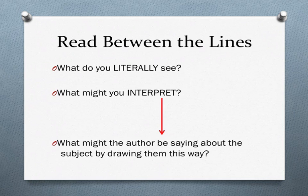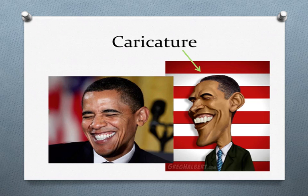One of the ways that images are manipulated is through caricature. This is where we take somebody's physical features and distort them to make them look a little silly. Obama is known for a narrow chin, big toothy grin, and ears that stick out a little bit. A caricature takes those features and expands them to make him look less accurate and perhaps poke a little fun at him.